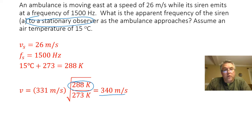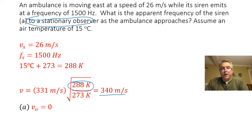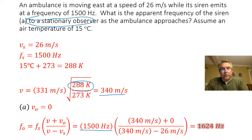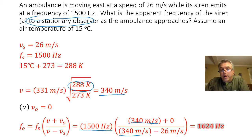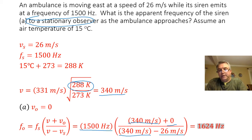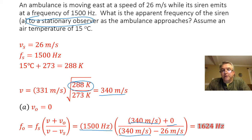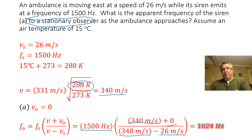I am looking for the observed frequency for a stationary observer, so I know that the velocity of the observer is zero. Now I can plug all of that information into my Doppler equation. I have the frequency of the source at 1500 hertz, the velocity of the sound wave in air at 15 degrees Celsius is 340 meters per second, the velocity of my observer is zero, and the velocity of the source — the ambulance — is 26 meters per second. When I do that math out, I get an observed frequency of 1624 hertz, which really should be 1600 hertz to two significant figures.